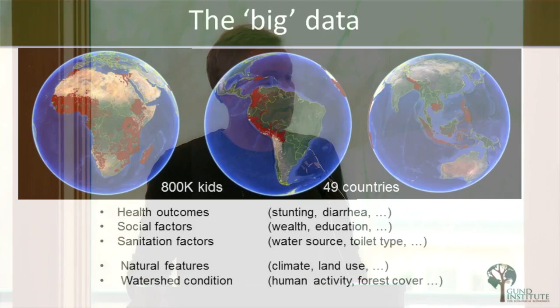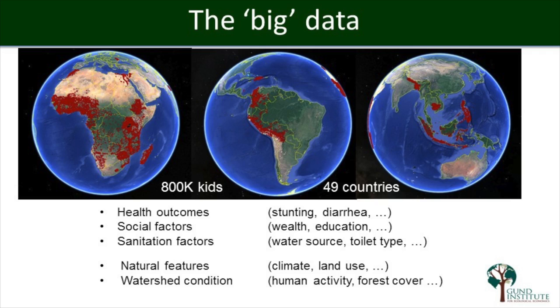We're approaching this in a big data way by using a set of surveys USAID has been collecting for 30 years called the DHS system. The red dots show where surveys of households have been done over the years. Our cleaned dataset has about 800,000 children from 49 countries. We know a lot about these people — health outcomes, social factors, and sanitation factors. We've also added environmental variables like natural features and watershed condition, including how much tree cover or human activity is in the watershed drawn specifically above each household.